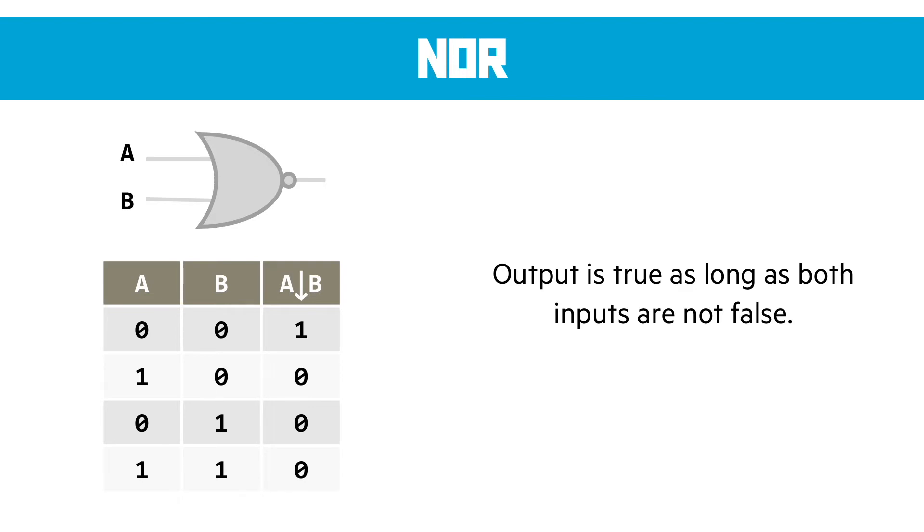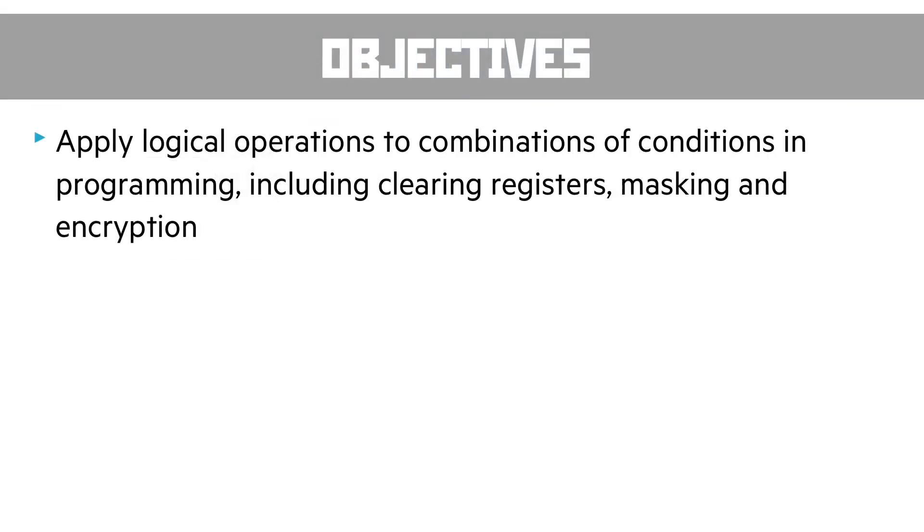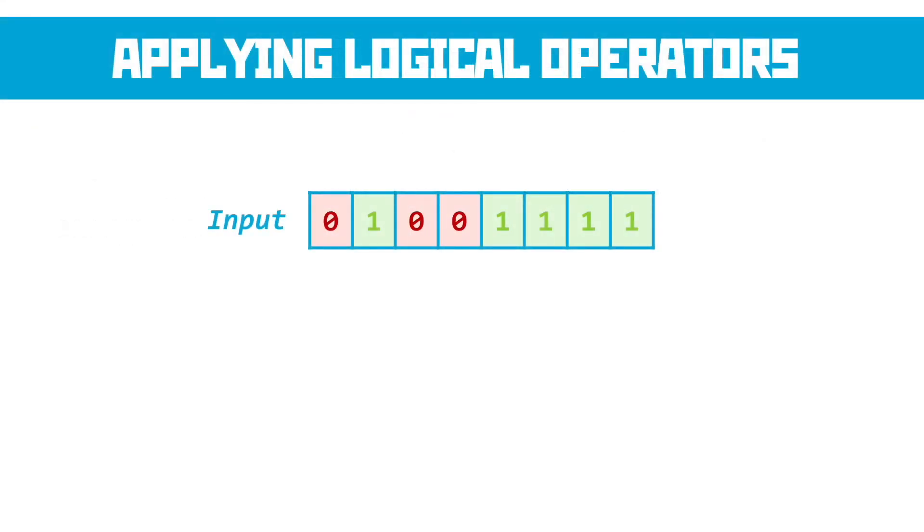The second objective is to apply logical programming operations to combinations of conditions in programming, including clearing registers, masking, and encryption. Now let's have a quick look at what we mean by applying logical operators. You'd have in this case an 8-bit input value. You'd also be given an 8-bit key along with an operation, in this case NAND.